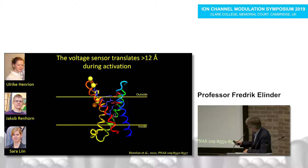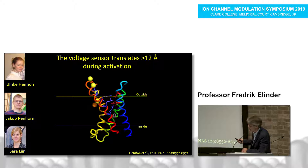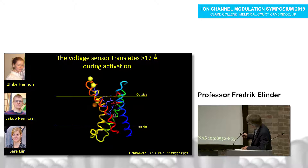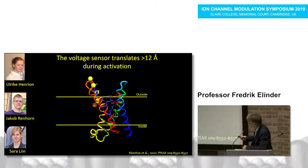What you saw was that S4 — the red segment — moves a considerable distance. In the down state, all of the blue arginines are at or below this position. In the up state, all of them are above the middle of the membrane. There is also a clear rotation of the voltage sensor in the last step when we open the ion channel.